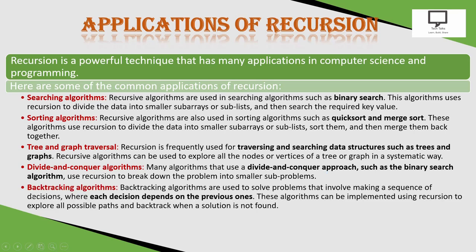Another algorithmic strategy is backtracking. Backtracking is useful when there is a need to make decisions where each decision depends on a previous decision. Backtracking algorithms are used to solve problems that involve making a sequence of decisions. These algorithms can be implemented using recursion to explore all possible paths and backtrack when a solution is not found. In the case of backtracking, recursion is used.